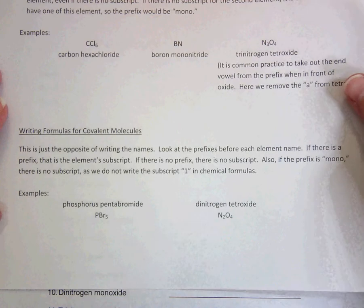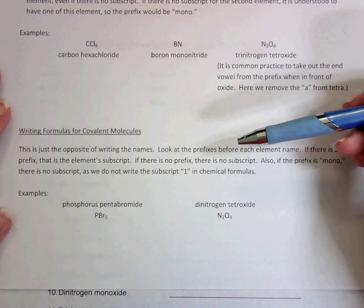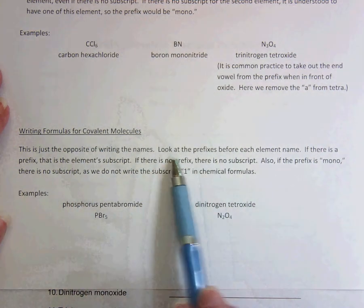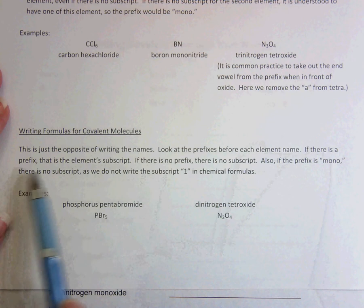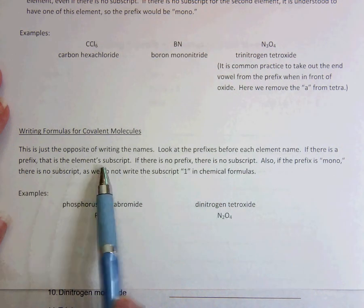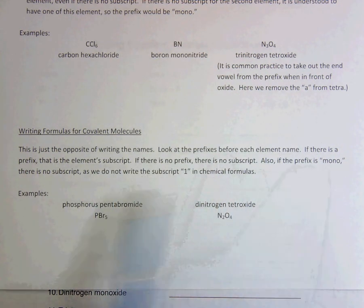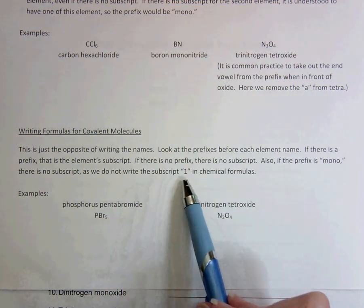So in your notes, just like what we were doing before, we're going to do the opposite of it. Look at the prefixes before each element name. If there's a prefix, that is the element subscript. If there's no prefix, then there's no subscript. If the prefix is mono, there's also no subscript, because we don't write ones as subscripts.